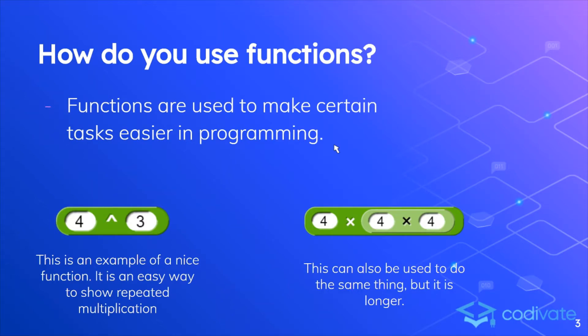So how do you use functions? Functions are used to make certain things simpler to use. For example, on the left side we see the exponent function, which is able to multiply the number on the left by itself a certain number of times. We can also see the block on the right, but it is longer and requires the use of two smaller blocks. In general, you want to use the block on the left for repeated multiplication.